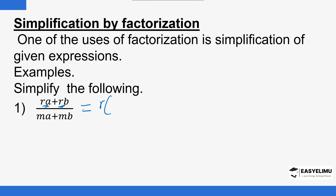You divide each of the terms by the common factor r. So r·a divided by r — r cancels r — and the answer is a. Plus r·b divided by r — again r cancels r — giving b. For the denominator, the common factor is m. We divide each term by m: m·a divided by m is a, and m·b divided by m is b. So the whole numerator bracket cancels the whole denominator bracket, and the answer is r divided by m.